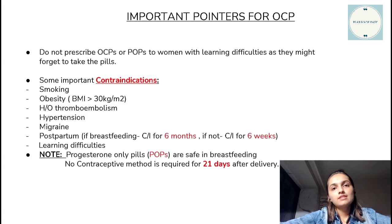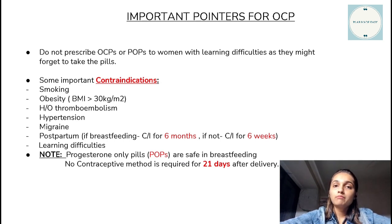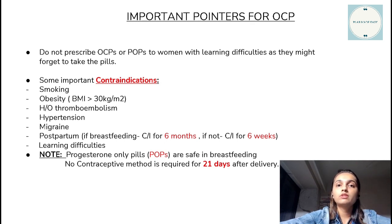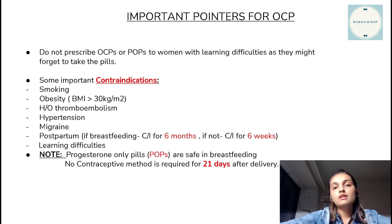Now let's discuss a few important contraceptive methods for the Plav 1 exam. The first one being the oral contraceptive pills. It is important to remember a few contraindications for the combined oral contraceptive pills. To enlist a few: smoking, hypertension, migraine, obesity — i.e. BMI more than 30 kg/m² — because the combined pills themselves cause a small amount of weight gain. History of thromboembolism, because the combined pills create a state of hypercoagulability which could increase the risk of thromboembolism.